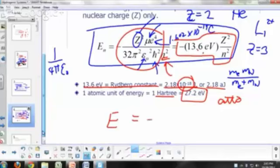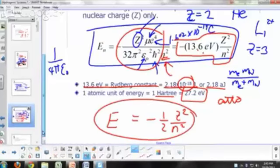It's going to be minus one half Z squared over N squared. Hartrees. Is that right? 13.6 electron volts is half a Hartree. One half atomic unit of energy is a Hartree. So those are your allowed energies.